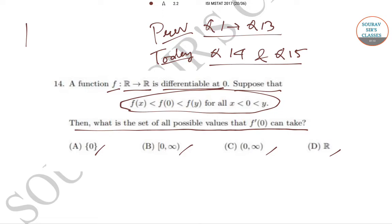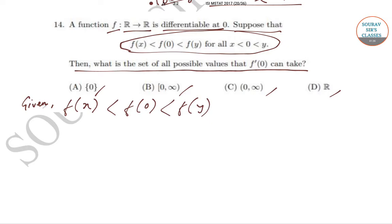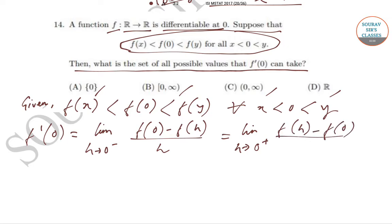Let's begin. It has been given that f(x) < f(0) < f(y), where x < 0 and 0 < y. By definition, f'(0) is found using limits. The left-hand limit is: limit as h tends to 0⁻ of [f(0) − f(h)] / h. This equals the right-hand limit: limit as h tends to 0⁺ of [f(h) − f(0)] / h.